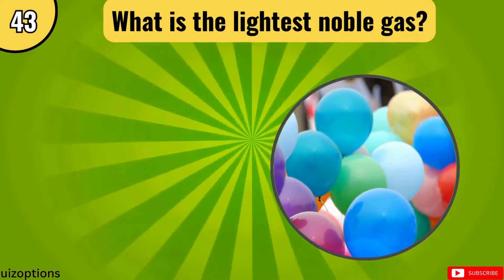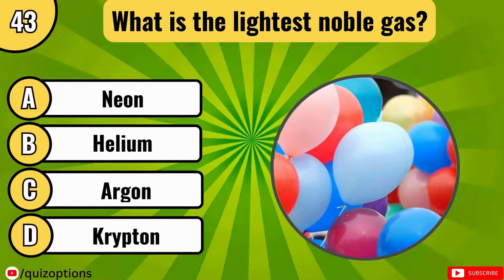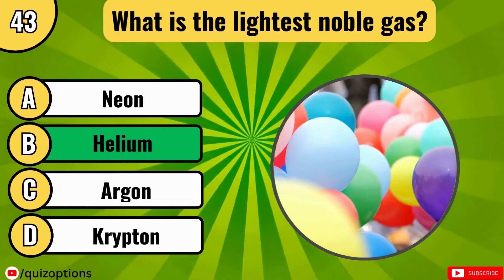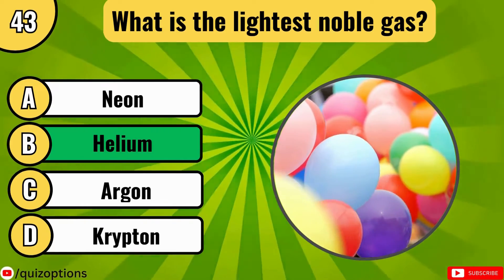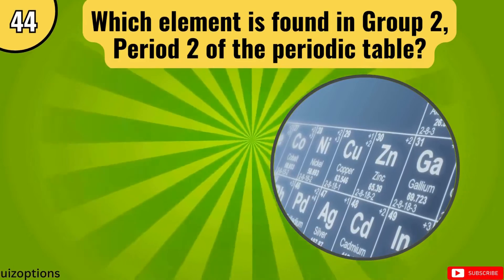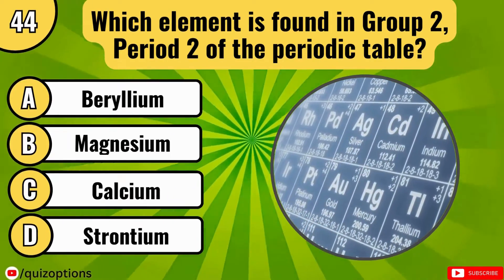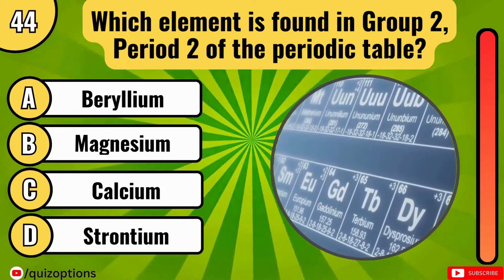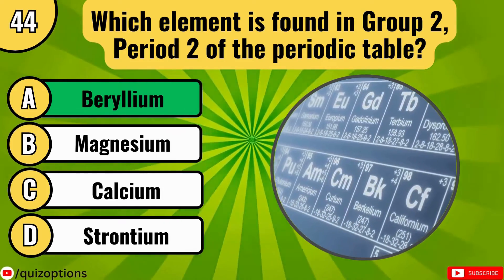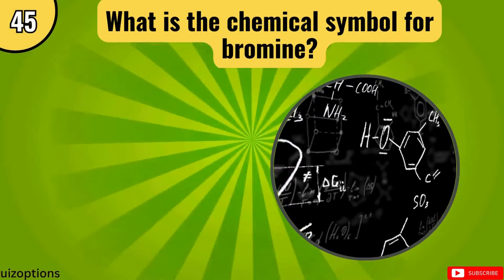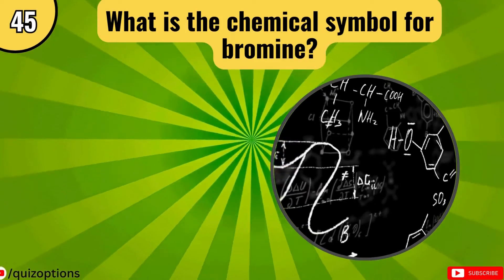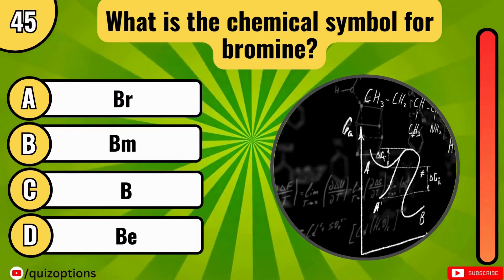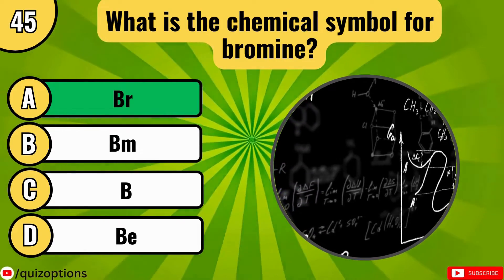Next is, what is the lightest noble gas? Which element is found in group 2, period 2 of the periodic table? And what is the chemical symbol for bromine? Option A, Br, is the right answer.